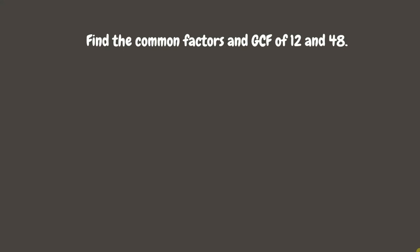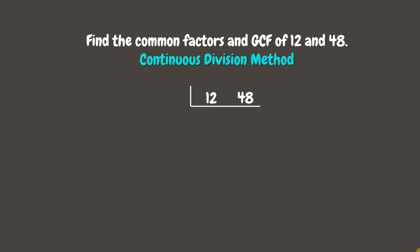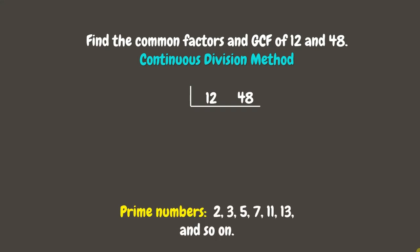Let's find the common factors and GCF of 12 and 48 using the Continuous Division method. Step 1: write the numbers 12 and 48 horizontally. Next, let's divide the numbers by a prime number and write the quotients below the dividends. Let us start by dividing by the smallest prime number, which is 2. 12 divided by 2 is 6, while 48 divided by 2 is 24.